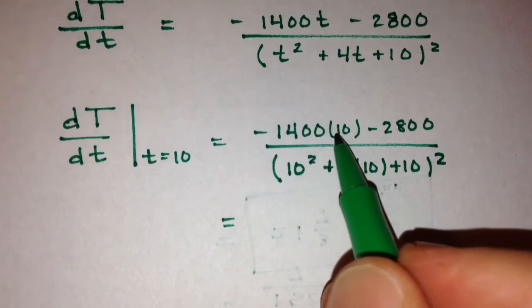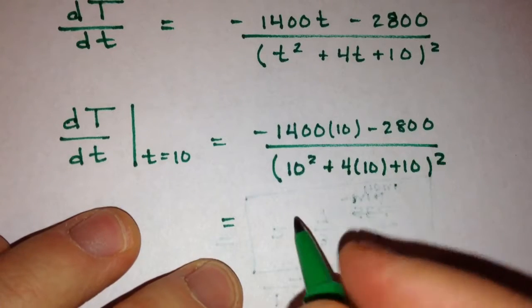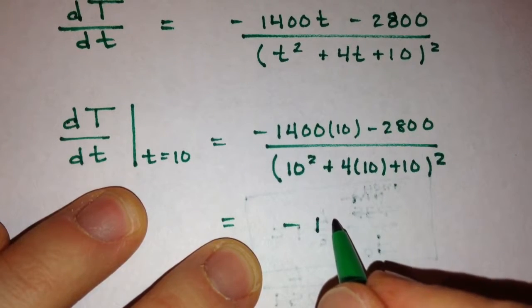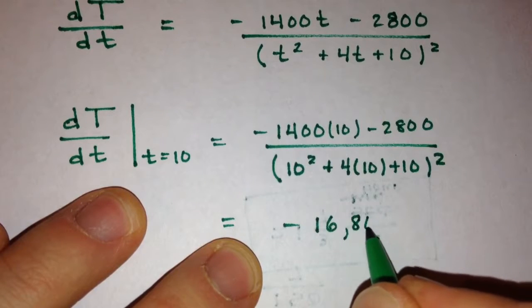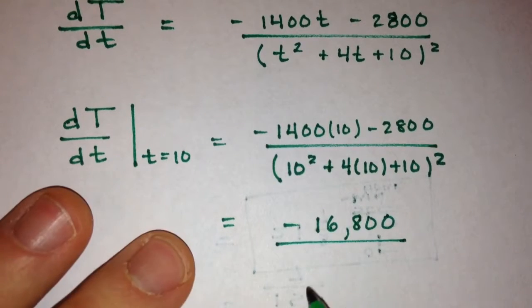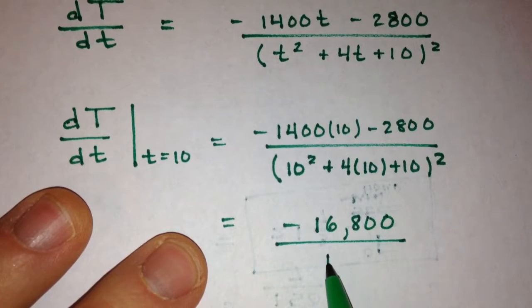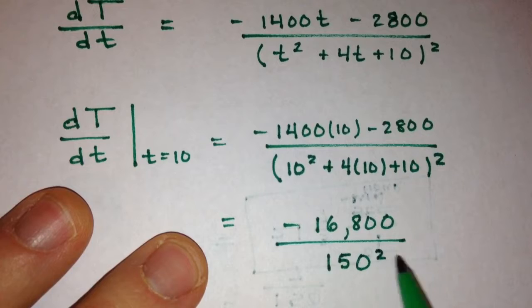All right, so let's see. That would be 14,000 plus 2,800, which is going to give us negative 16,800. Over, in the denominator, we've got 100 plus 40 plus 10 is 150 squared.